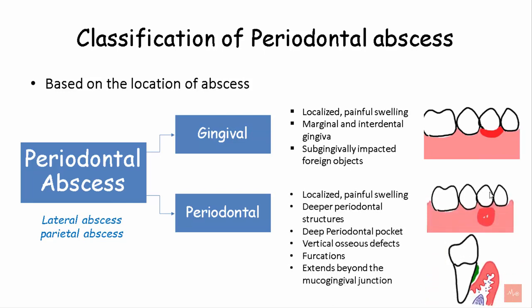Periodontal abscesses are localized painful swellings related to deeper periodontal structures. They may be associated with deep periodontal pockets and vertical osseous defects. They are also seen around furcation defects and extend well beyond the mucogingival junction.